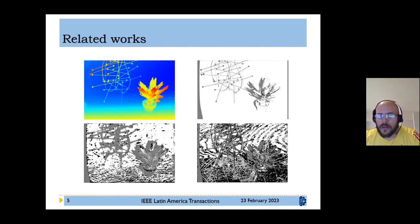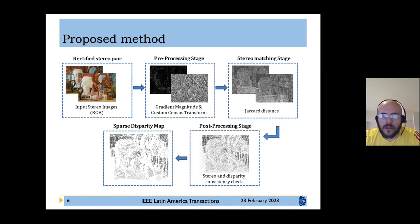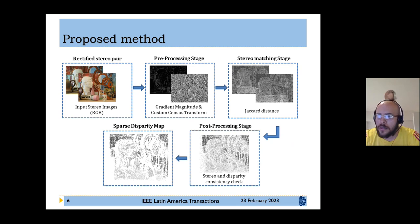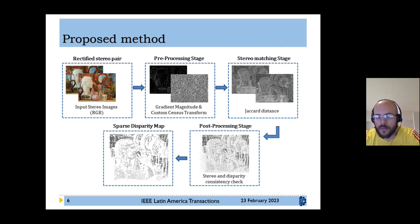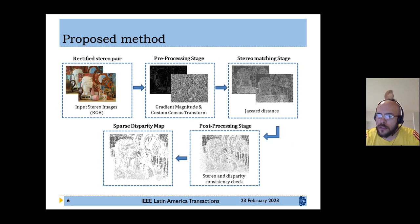The proposed method consists of three main stages. The first is pre-processing, where a gradient image is estimated and a volume is obtained from a given image by means of a custom census transform, which can be used with window sizes larger than those used in the state of the art. This census transform is computed for the left and right images and is key to obtaining a binary vector for each pixel.